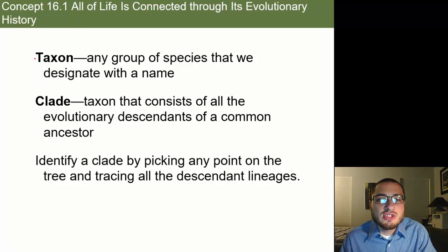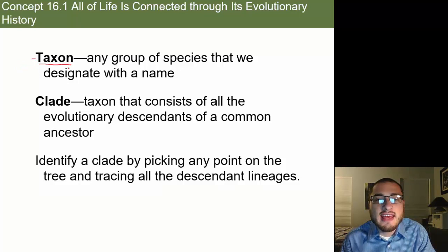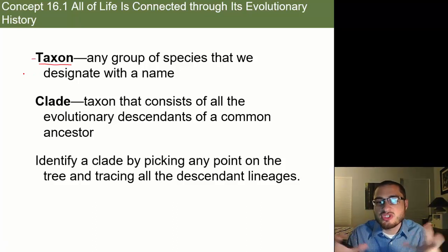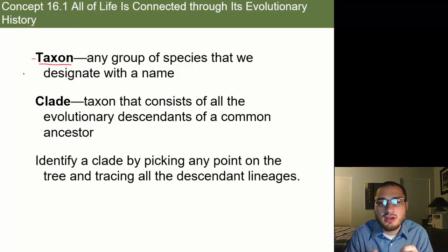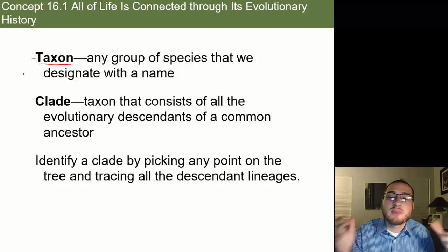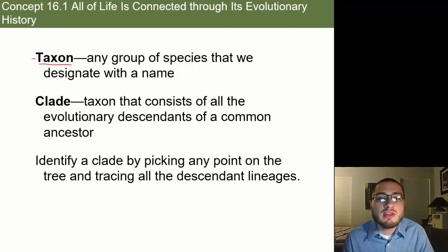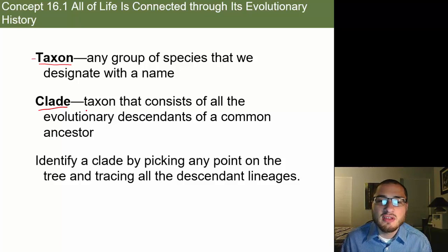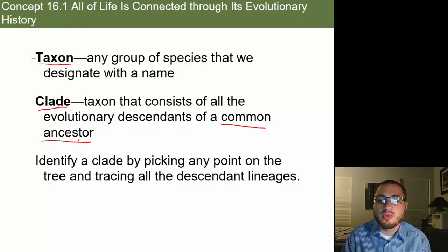We like to create groups of different species, and any group of species is called a taxon. A taxon can be a small group like different types of foxes, or a larger group like all types of canines or all types of mammals. What we particularly like to look at are clades, which are groups or taxons that consist of all the evolutionary descendants of a common ancestor.